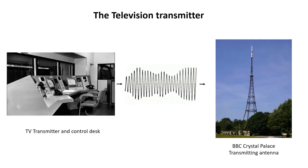The television signal is then used to modulate a carrier wave as described in the How Radio Works video and is transmitted from the transmitting antenna along with the sound signal.